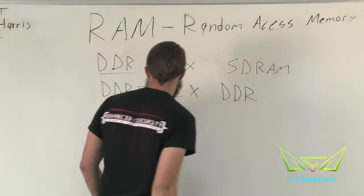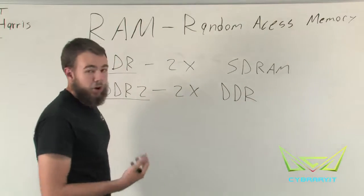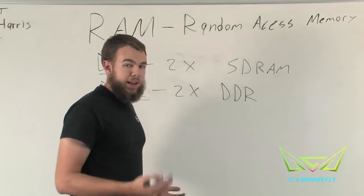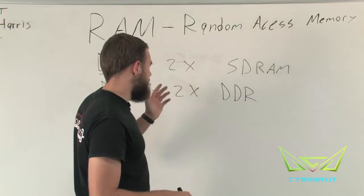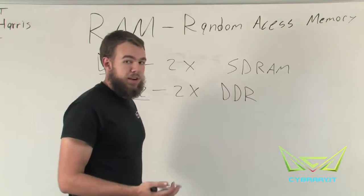DDR2 would be two times DDR. However, a little bit of a disadvantage with DDR2 is there's a little bit more latency. So, while we have twice the data transfer as DDR, there's more latency with that data transfer.